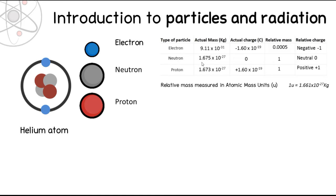The neutron and proton do have slightly different masses, as you can see when written to four significant figures. You don't actually need to know why for A-level physics, but the neutron is slightly heavier and has slightly more mass.